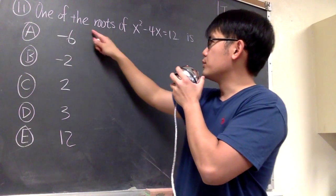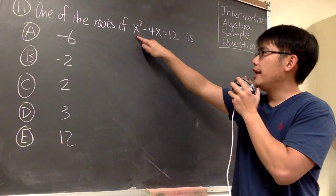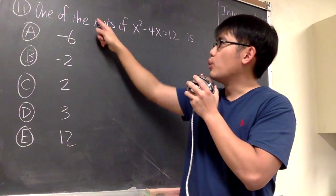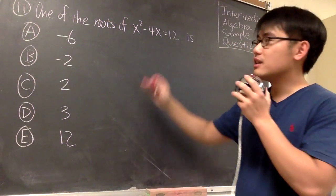For number 11, we are going to find one of the roots of the quadratic equation x squared minus 4x is equal to 12, and we have to know that the word roots just means the solutions for the equation.